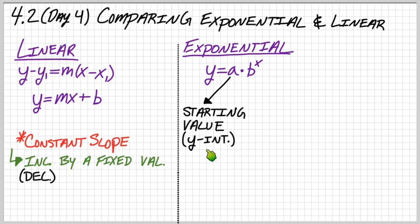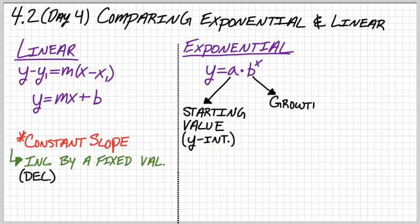To find the y-intercept, you just plug in 0 for x. So b to the 0 is just 1 — that goes away — which is why a gives us the y-intercept. And then b is our growth factor, calculated by 1 plus r, where r is the actual rate that it's growing or decaying.